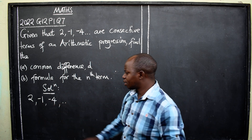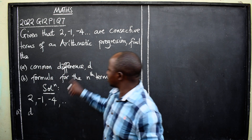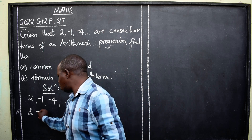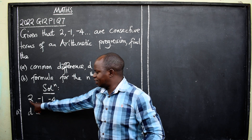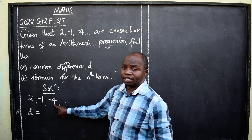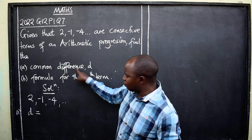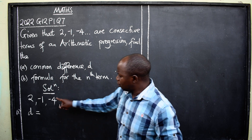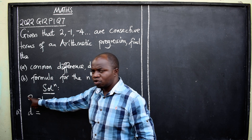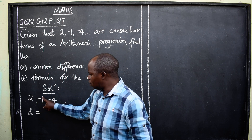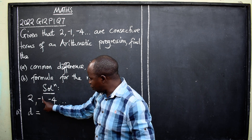The common difference d is always found by subtraction. This is the first term, second term, third term. The word 'difference' means subtract, so you are going to subtract — always go the backward way — negative one minus two.